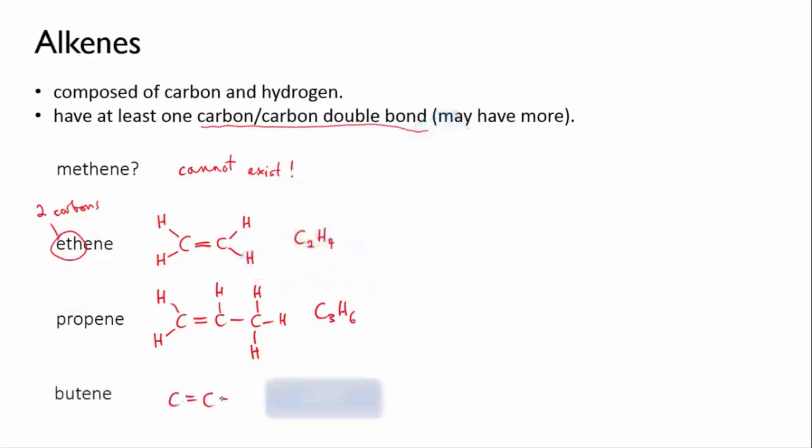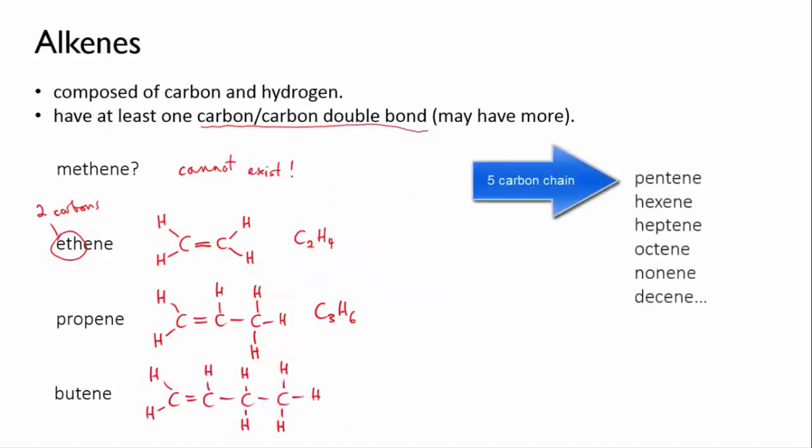Next, we've got butene, four carbons. Join the first two by a double bond and then fill in the hydrogens. And that gives us C4H8. And the series continues with pentene and hexene and so on. For practice, it's a good idea to try drawing out these larger alkenes and alkanes.